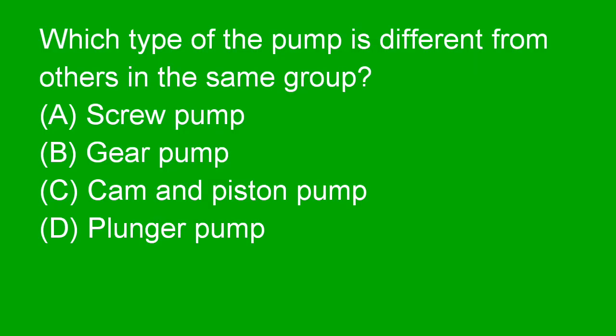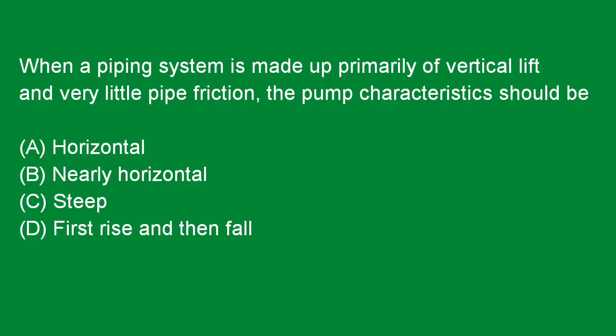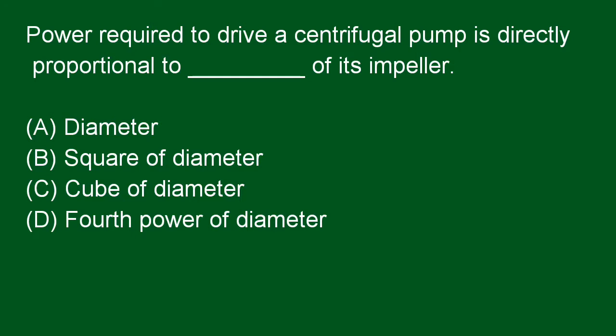Next question: Which type of pump is different from others in the same group? The plunger pump is different. Option D is right. Next question: When a piping system is made up primarily of vertical lift and very little pipe friction, the pump characteristics should be steep. Option C is right. Next question: Power required to drive a centrifugal pump is directly proportional to the fourth power of diameter of its impeller. Option D is right.